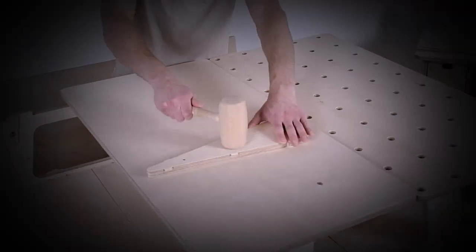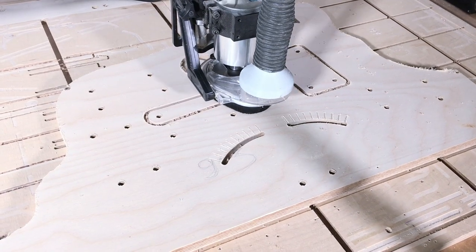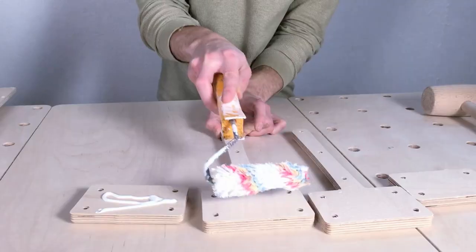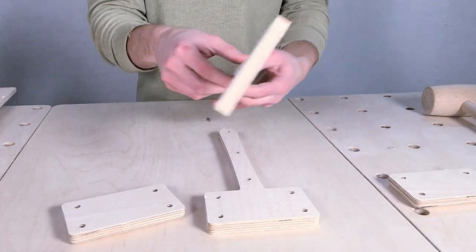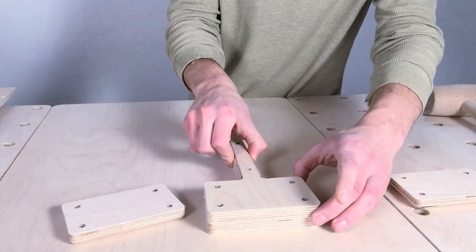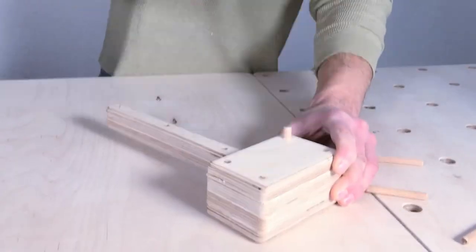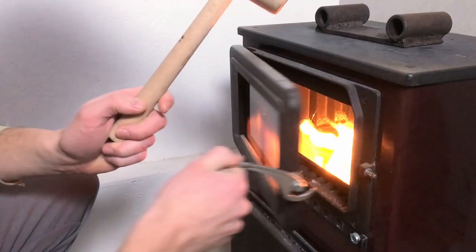While the glue is drying we have to make a new mallet. I broke the one I had while building the workbench. To make one all we have to do is cut the mallet components on the CNC, trim a couple of edges and glue the parts together. For positioning the components I used 8mm dowels at the corners of the mallet head and on the handle of the mallet. And then I threw the old mallet in the furnace.